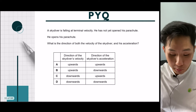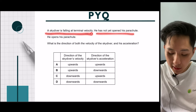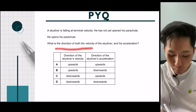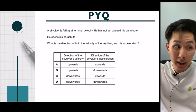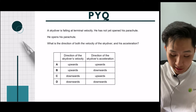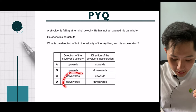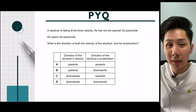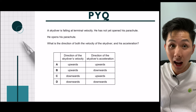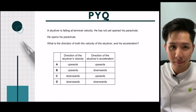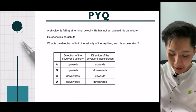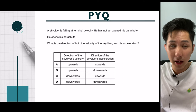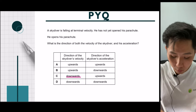Past year question: a skydiver is falling at terminal velocity and has not yet opened his parachute. He then opens the parachute. What is the direction of both velocity and acceleration? Since the skydiver is still moving downward, velocity is downwards. But after opening the parachute, air resistance is higher than weight, so there's an upward acceleration slowing the skydiver down. Velocity is downward; acceleration is upward. The answer is C.